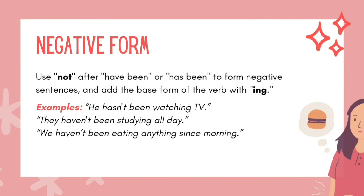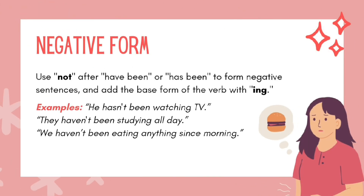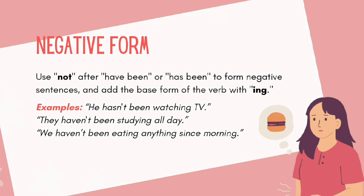Negative form: Use not after have been or has been to form negative sentences, and add the base form of the verb with -ing. Examples: He hasn't been watching TV. They haven't been studying all day. We haven't been eating anything since morning.